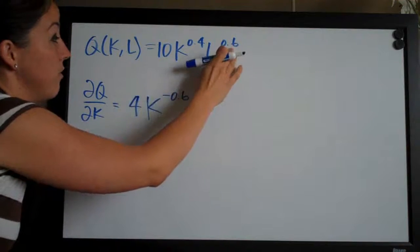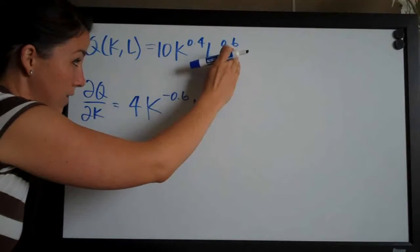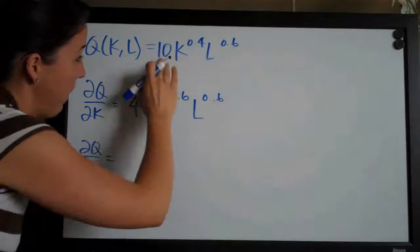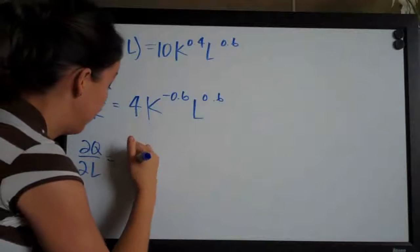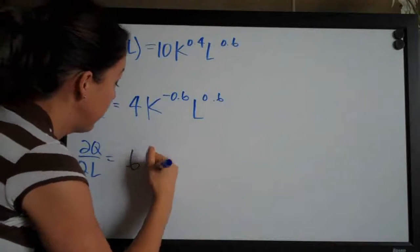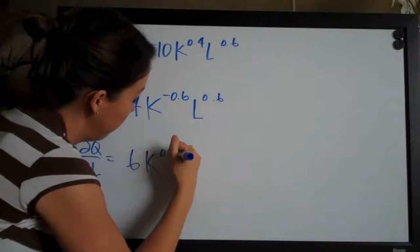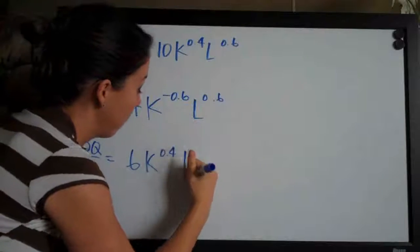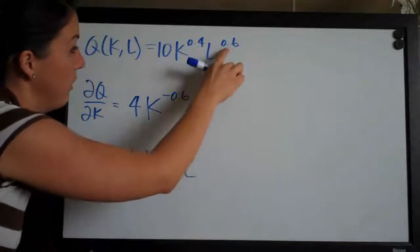and all we need to do is multiply the exponent here on the l by 10 out in front. So we'll get 6 and then we leave k to the 0.4 alone and then l, we subtract 1 from the exponent.